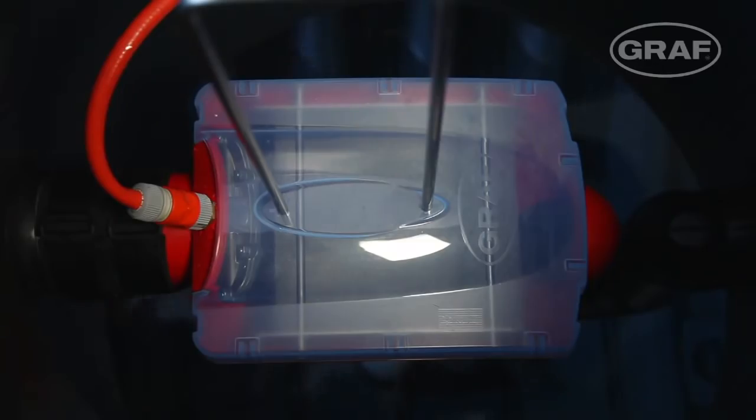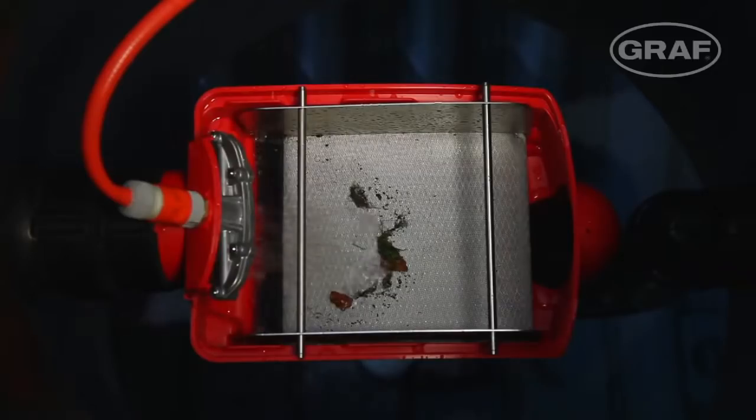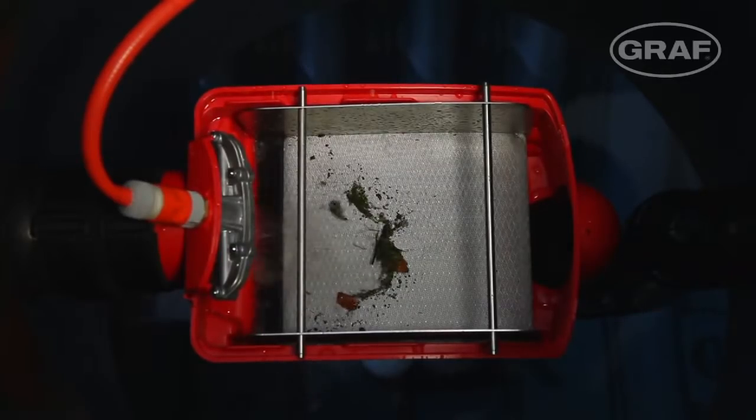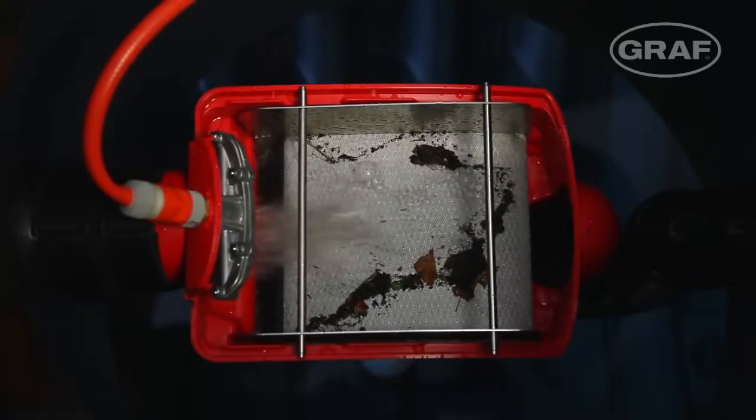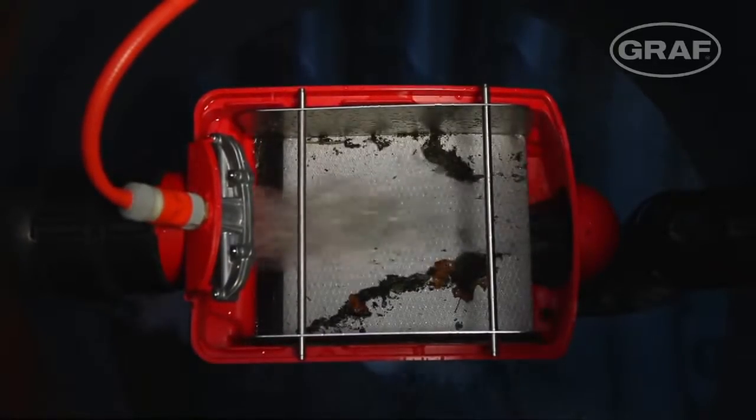The status of the filter can be easily seen at any time through the transparent cover. The large filter surface also guarantees high efficiency even with a certain amount of contamination. The dirt is simply discharged into the drain during the next downpour.